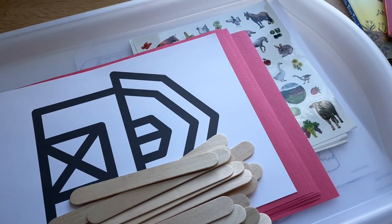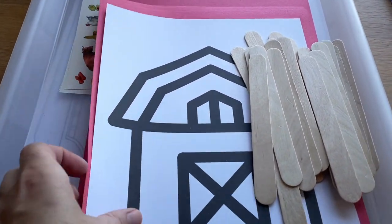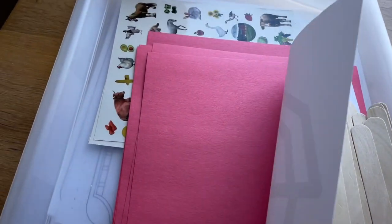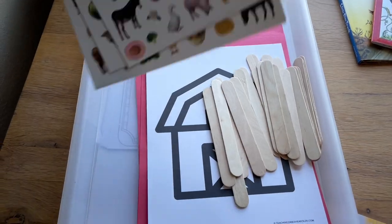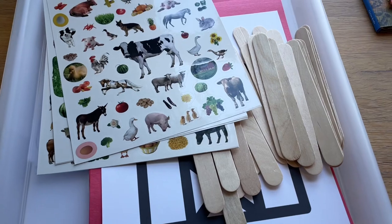This is our barn process art where the children paint the barn and then glue the sticks on. The next day we will put the farm animal stickers on there, probably using another sheet of paper as the background.